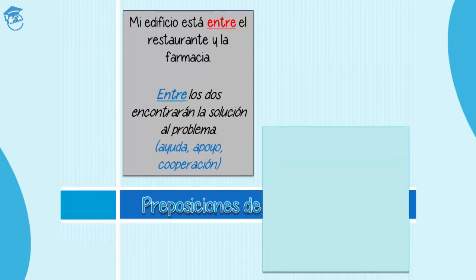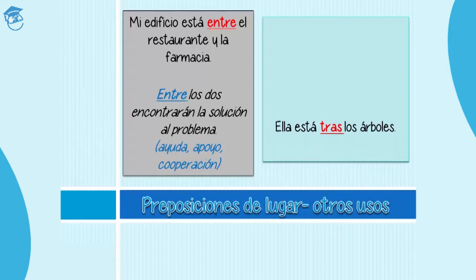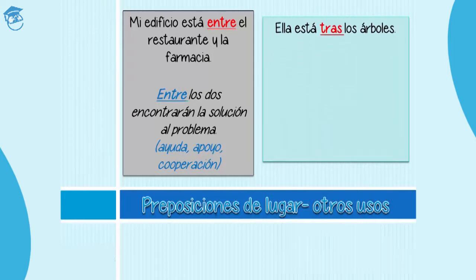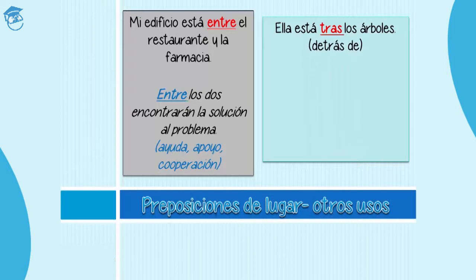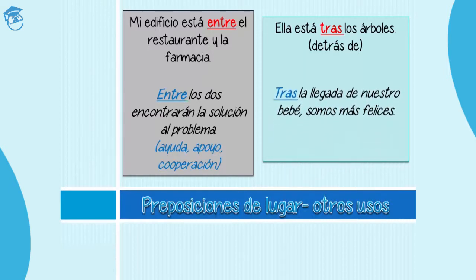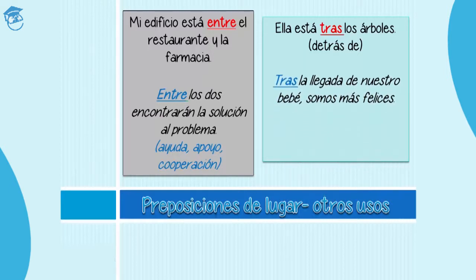Veamos un último ejemplo. Ella está tras los árboles — she is behind the trees. Tras can also be detrás de. But let's see how you can use tras with another meaning. For example, tras la llegada de nuestro bebé, somos más felices. Here, tras is a preposition of time, because you're talking about a moment that happened and what happened after that moment. Tras is like after, right after. Tras la llegada de nuestro bebé — after the arrival of our baby — we are so much happier.